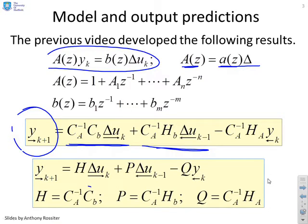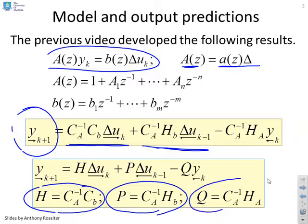You can write H for CA inverse CB, capital P for CA inverse HB, and capital Q for CA inverse HA. What we're going to do in this video is focus on how you get H, P and Q, which are the key matrices you need for predictive control.